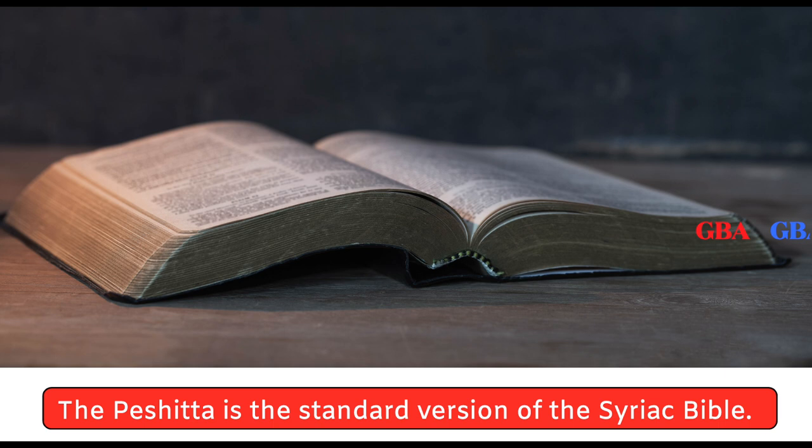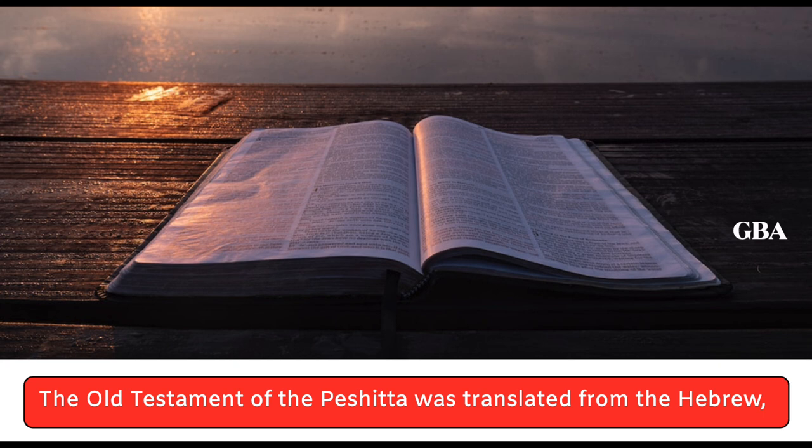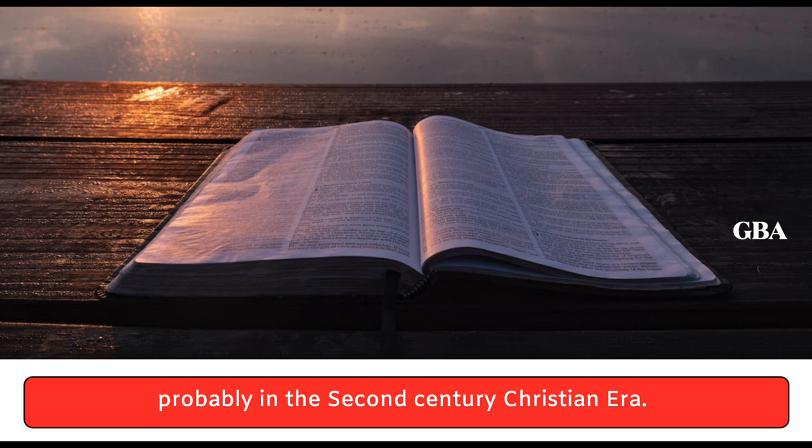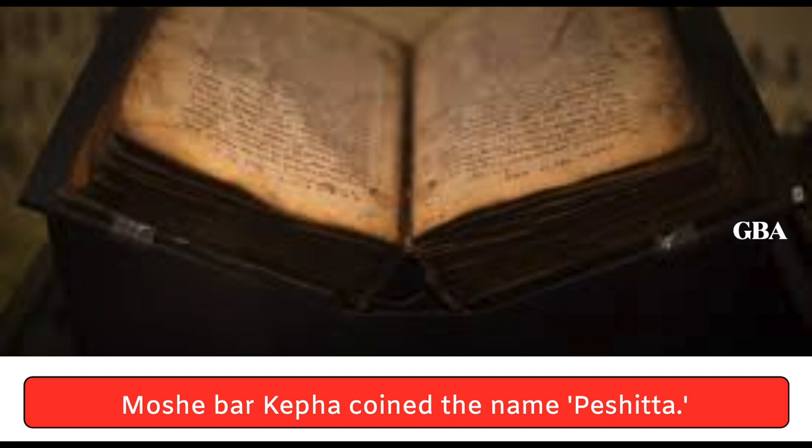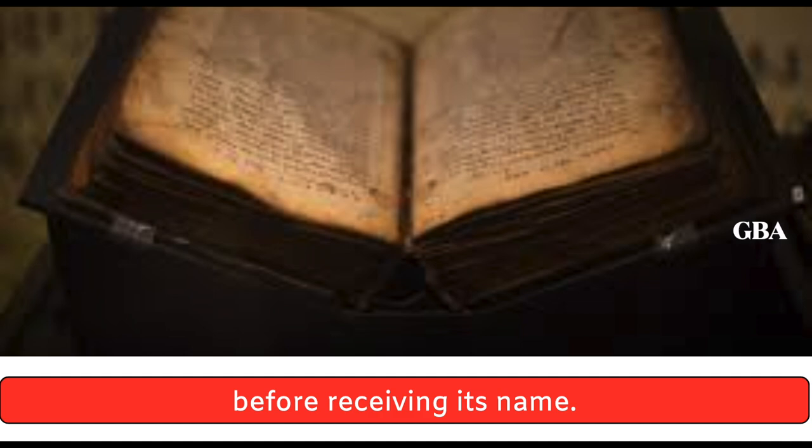The Peshitta is the standard version of the Syriac Bible. The Old Testament of the Peshitta was translated from the Hebrew, probably in the 2nd century Christian era. The New Testament of the Peshitta, which originally excluded certain disputed books, had become the standard by the early 5th century. Moshe Bar-Kefa coined the name Peshitta. However, it is clear that the Peshitta had a long and complex history before receiving its name.